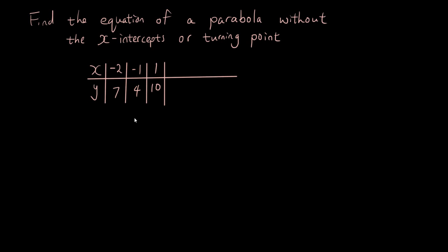Hey guys, this is Eddie the Magic Monk. One of my subscribers asked me how you could find the equation of a parabola without giving the x-intercepts or the turning point. In this case, I'm not going to give you any intercepts — just a few points on the parabola. How do we get the equation of it?